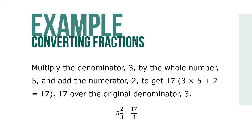In this example, we multiply the denominator, 3, by the whole number, 5, and add the numerator, 2, to get 17. 3 times 5 plus 2 equals 17. We then place the 17 over the original denominator, 3.